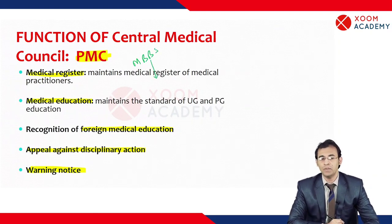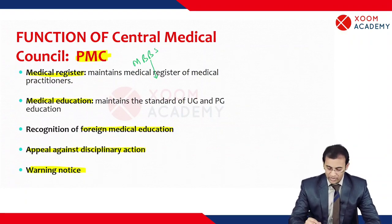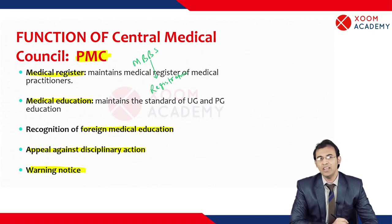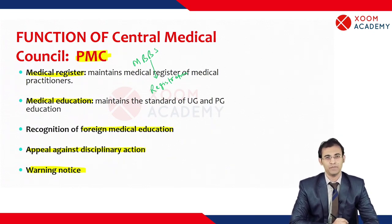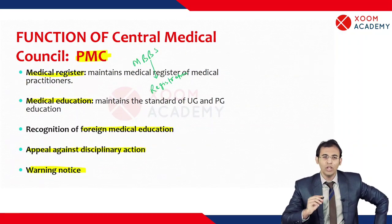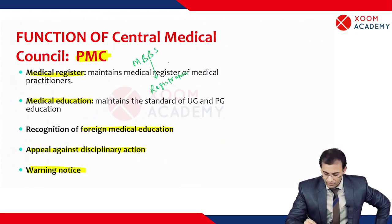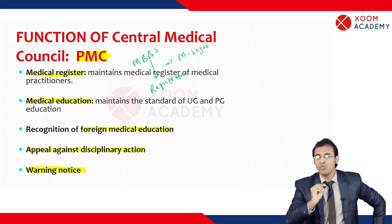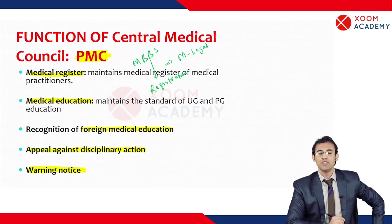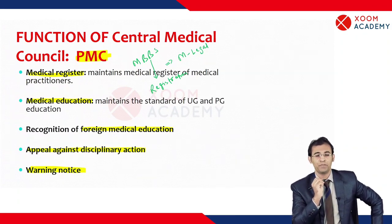You have to apply for the license, and after that you will get a registration number. With the help of that registration number, you will be allowed legally to practice medicine in your country. All doctors are practicing within the medical-legal system — we are bounded by our legal system — and every doctor has one license number.